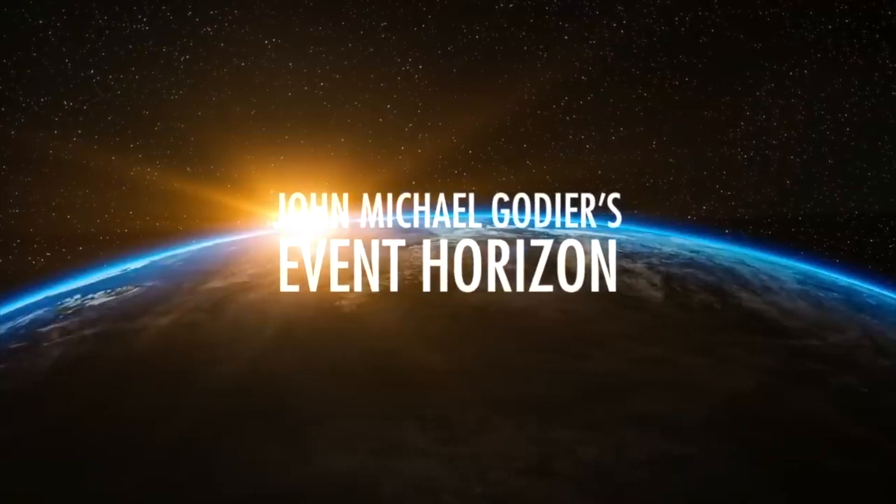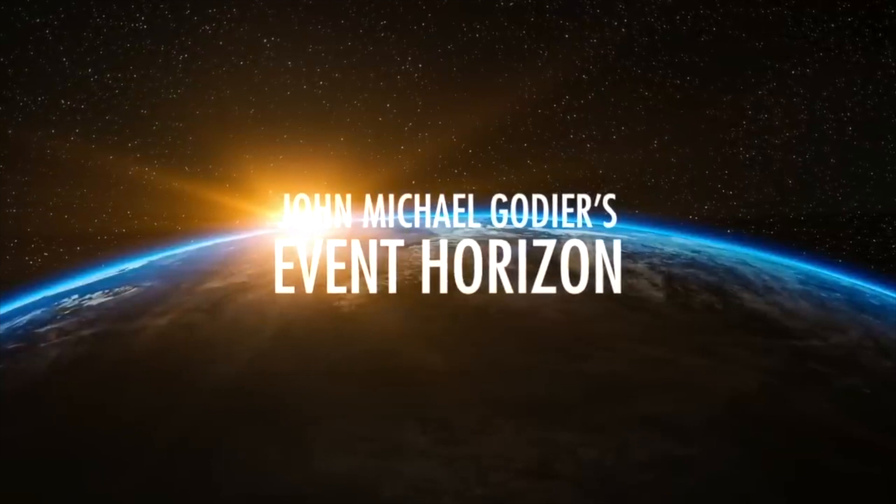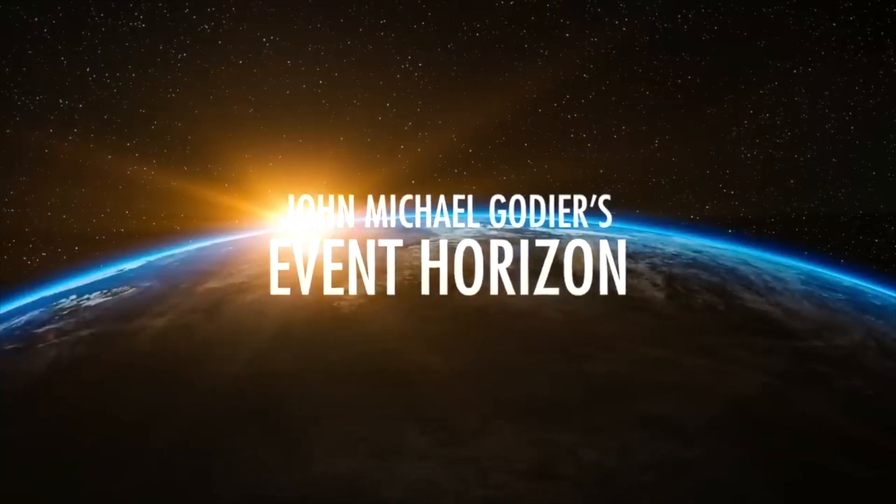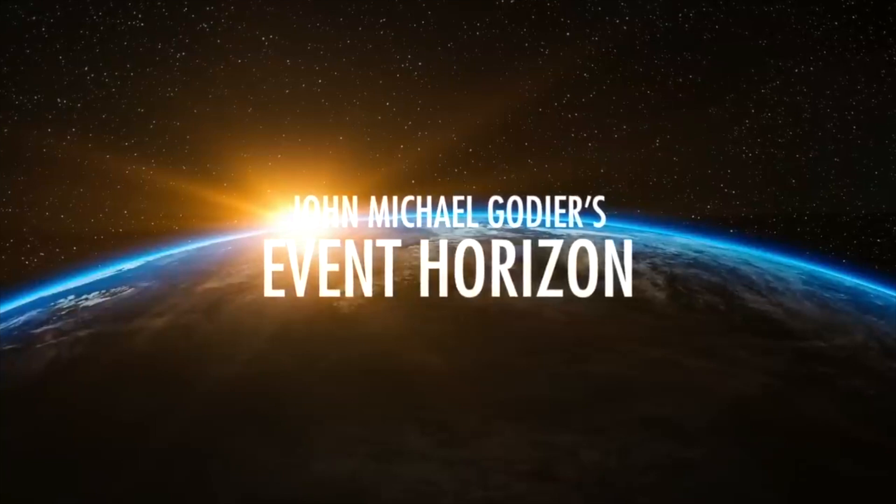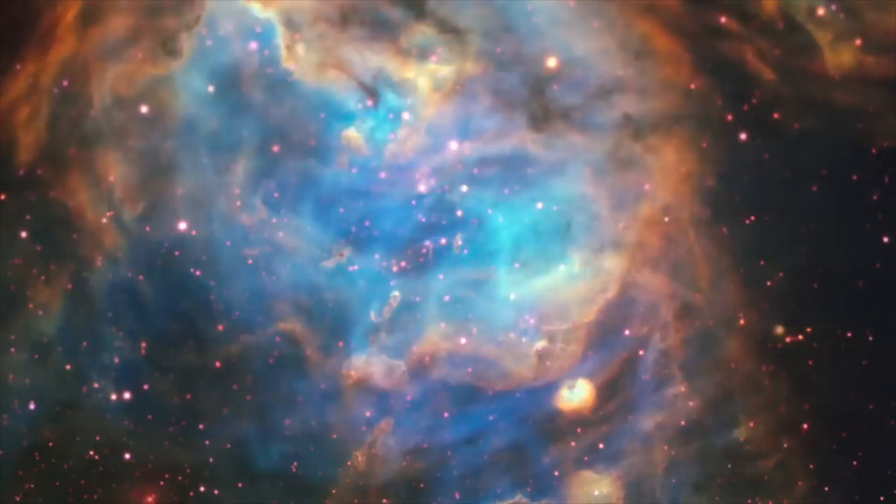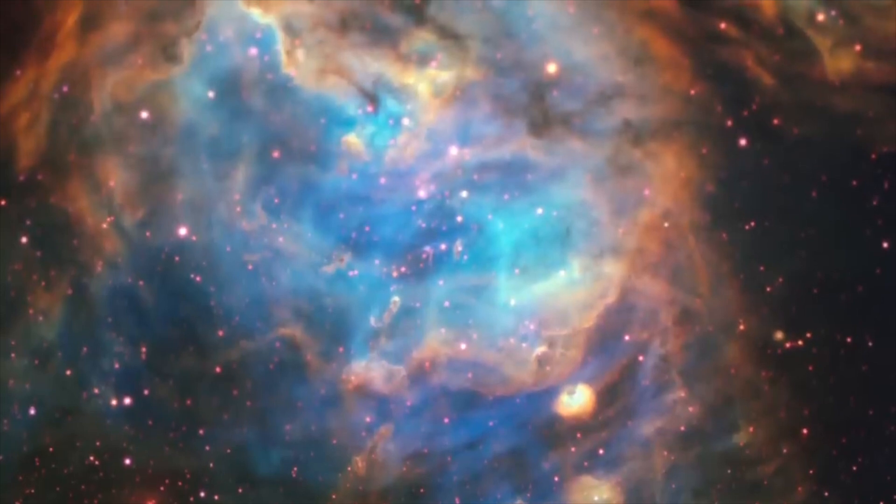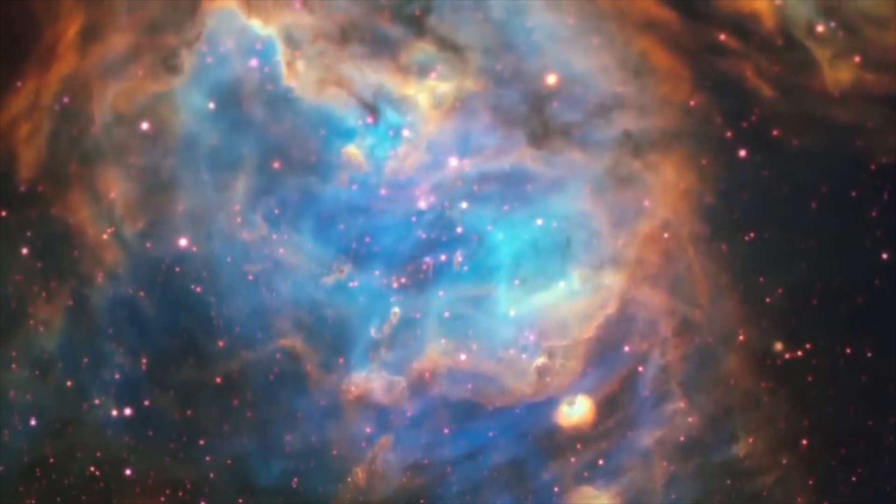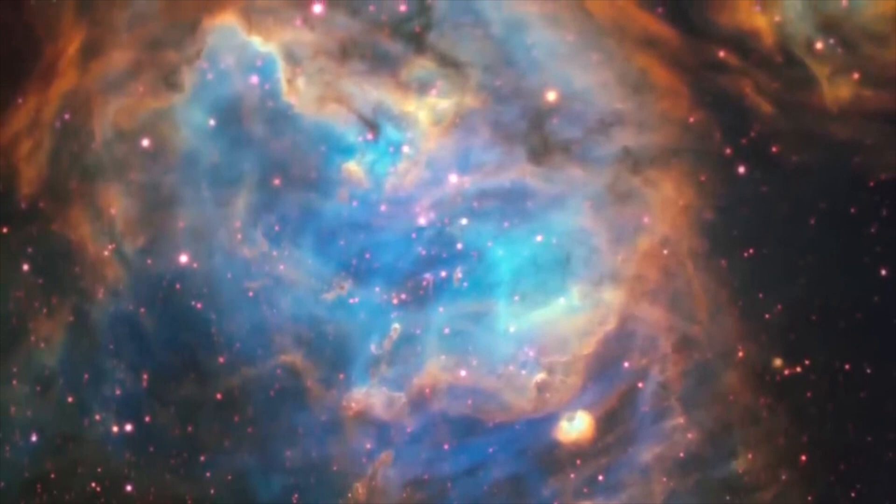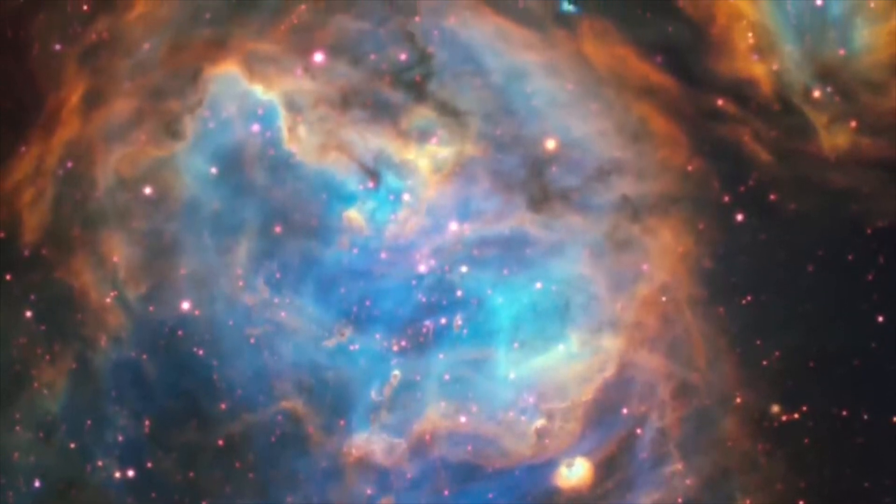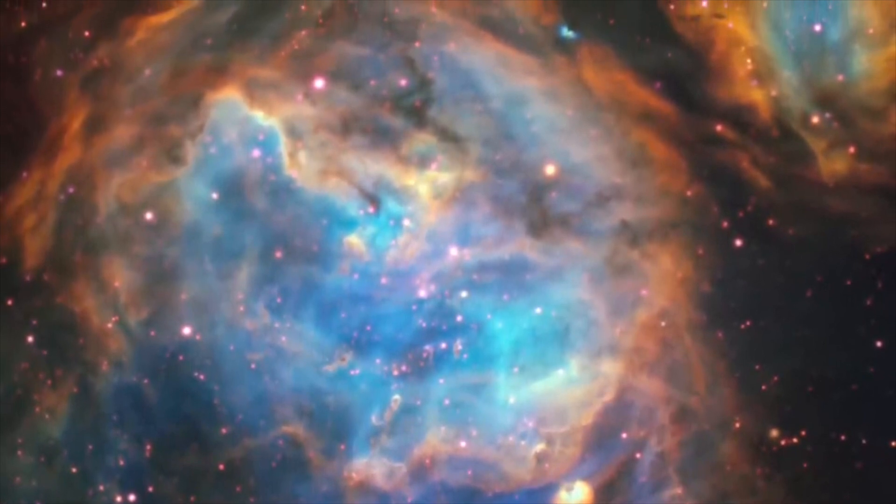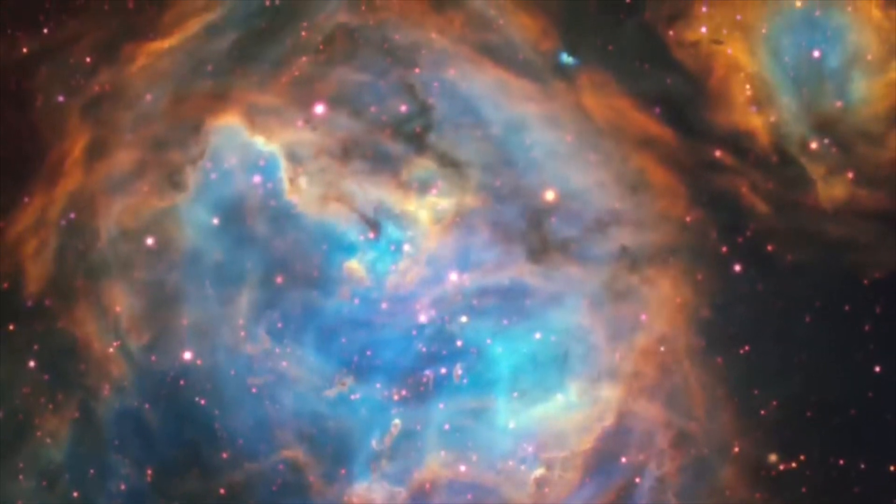Looking at the Large Magellanic Cloud, which is a satellite galaxy of the Milky Way, and actually seeing some detail - it still is another galaxy. And here we have an accretion disk around a giant star that you are able to measure from that distance. What is the methodology in gathering data on something like this?